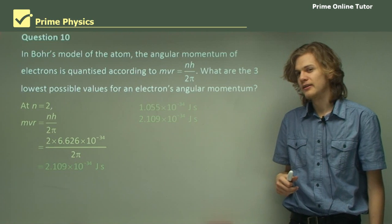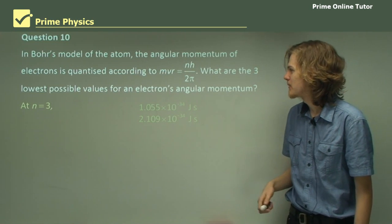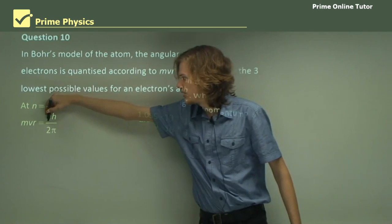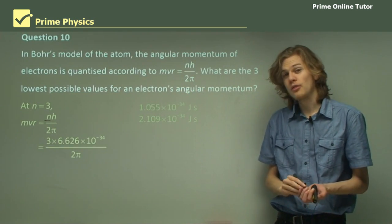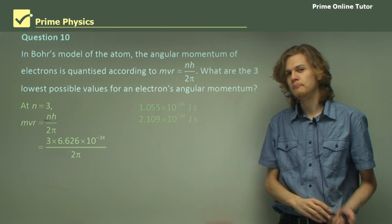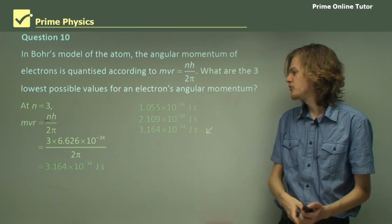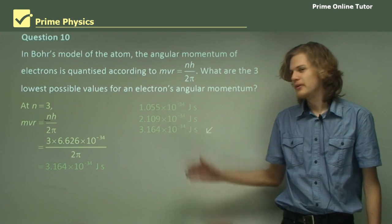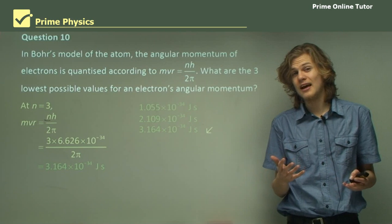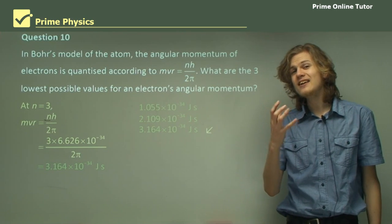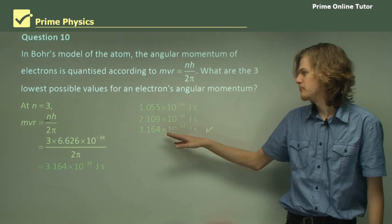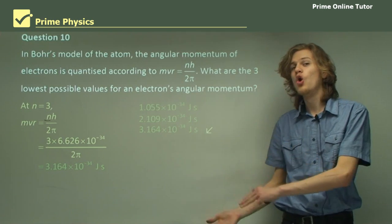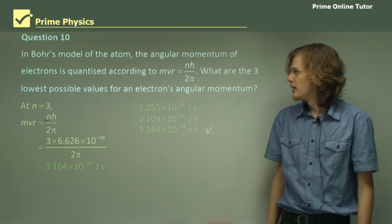Can you guess what it is? Yeah, it's n equals 3. So, with our equation as before, we now take the 3, stick it into the n, and we end up with 3 times Planck's constant over 2 pi. Put this into a calculator, and we end up with 3.164 times 10 to the minus 34 joule seconds. And so, the angular momentum of an electron in a hydrogen atom cannot take any other values aside from here, if it's below this value. If it wants to change its angular momentum, it can only do so by hopping up an energy level.